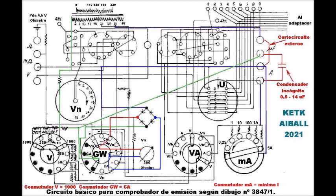En el momento en que el conmutador MA conecte en serie una resistencia, dicho polo llega al cuarto polo de la derecha y, atravesando el condensador, alcanza una bifurcación. Por la izquierda atraviesa dos resistencias limitadoras y alcanza el polo neutro del secundario del transformador. Por la derecha de la bifurcación, pasa al conmutador GW seleccionado en corriente alterna; a través de su contacto móvil pasa al puente de Graetz, y desde éste otra vez al conmutador GW.